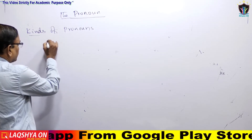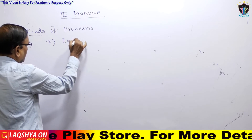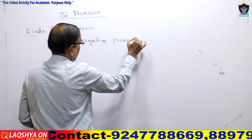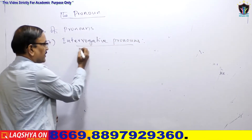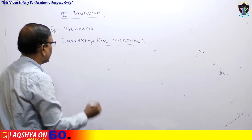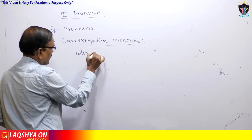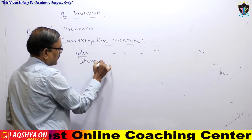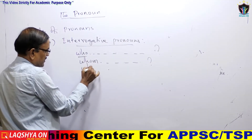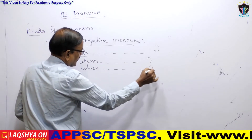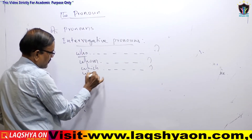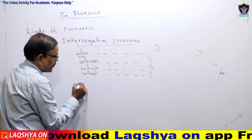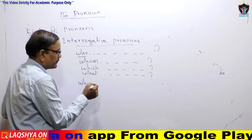Next topic: Interrogative Pronouns. Interrogative pronouns generally come at the beginning of the sentence. They are: who, whom, whose, which, and what. For example: 'Who are you?'